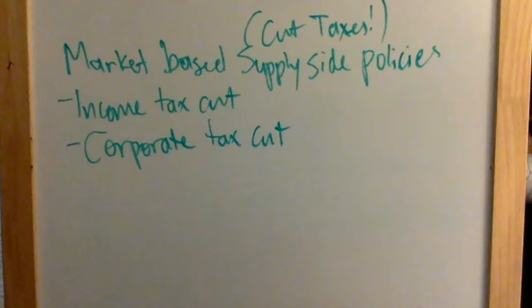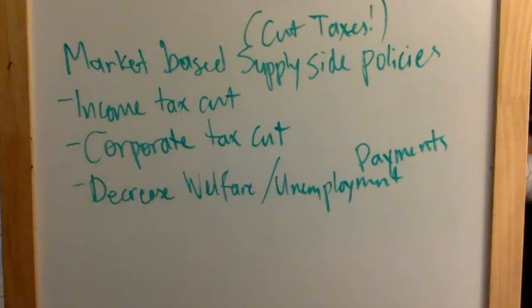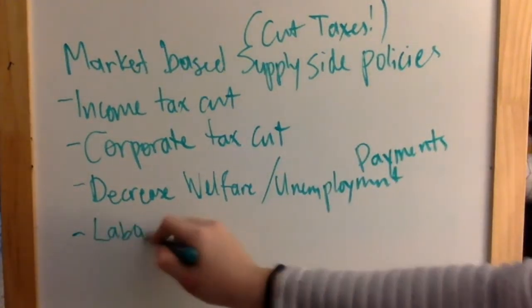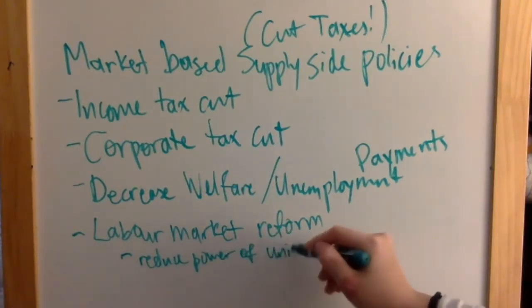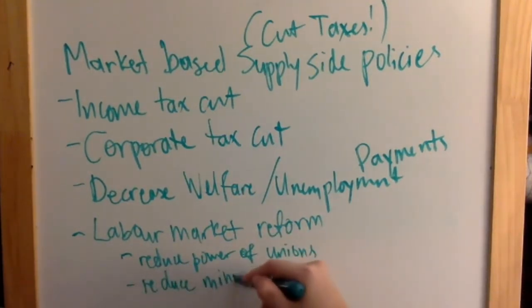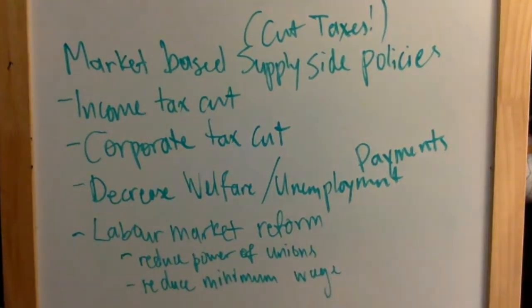Number two: corporate tax cuts. Firms will have more money to invest and to put into research and development. Thus, both aggregate demand and aggregate supply will shift outwards. If the money goes towards R&D, then long-run aggregate supply also shifts to the right. Number three: a decrease in social welfare or unemployment benefits. The opportunity cost of not working goes up and people will have to start working more, using the same labor mechanism that causes short-run aggregate supply to shift outward. Number four: labor market reform — getting rid of minimum wage, reducing the power of unions, reducing payroll taxes and other things that decrease the cost of labor to firms, which thus increases short-run aggregate supply.